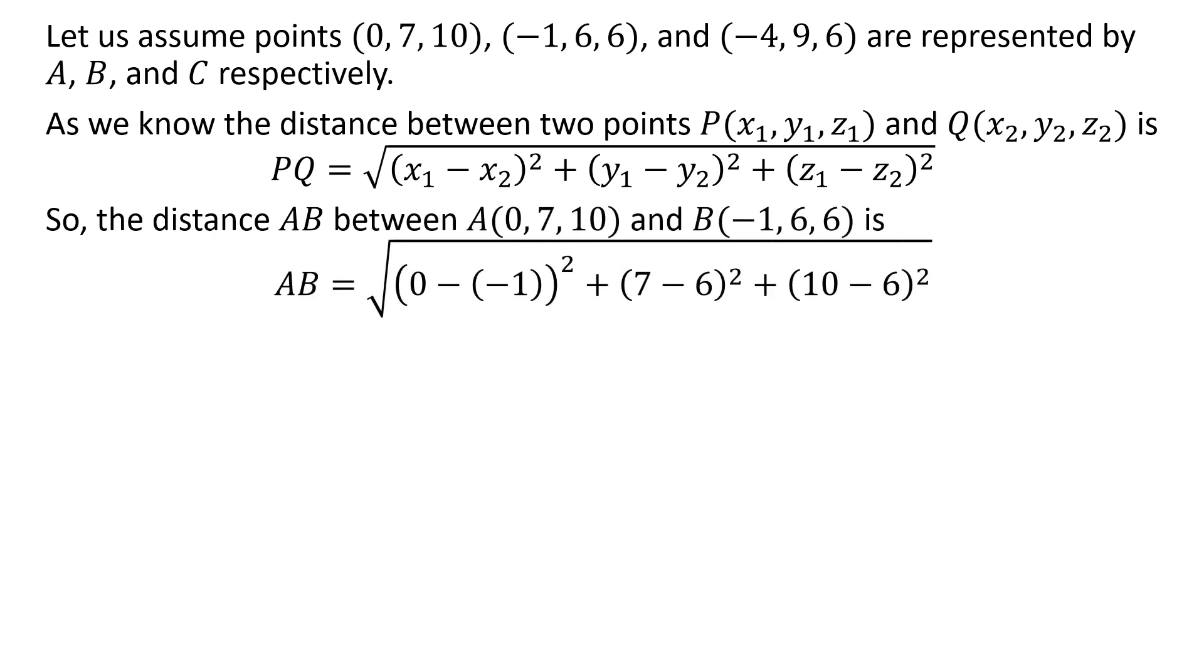So, the distance AB between the points A(0, 7, 10) and B(-1, 6, 6) is equal to square root of (0 - (-1))² plus (7 - 6)² plus (10 - 6)².